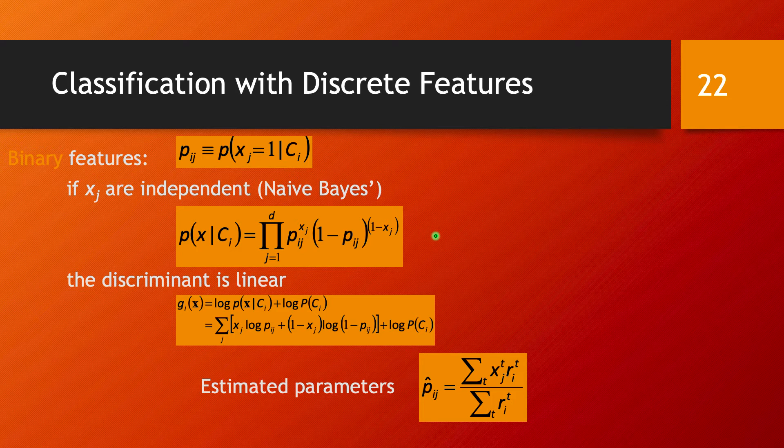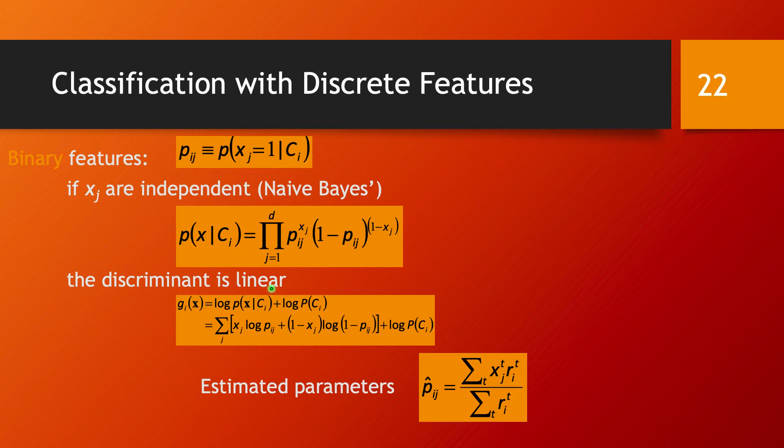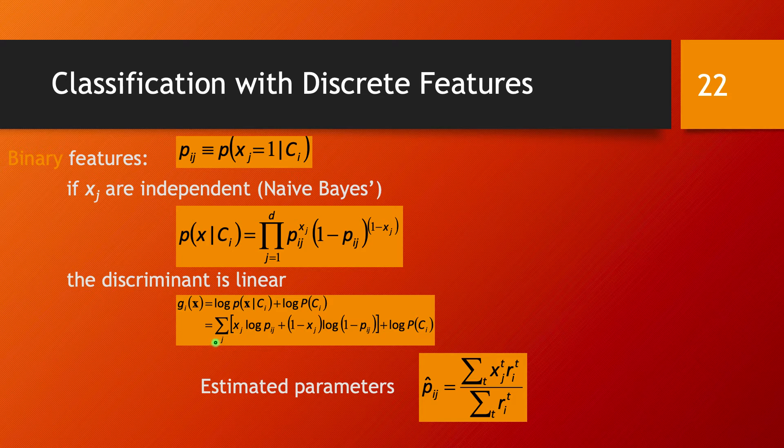We can take the discriminant function, and again, just like before from Bayes rule, we have this form. Once we plug in this form of the probability, we can see that the discriminant is linear in this case.